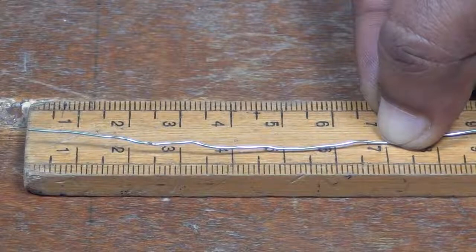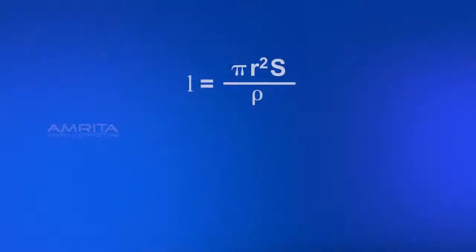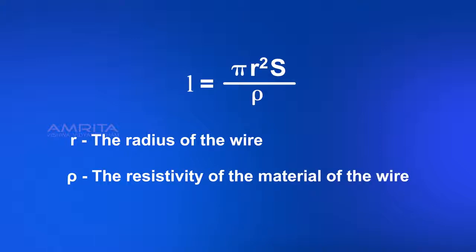Let L be the length of the resistance wire required for a resistance of S ohm. Then L equals pi R squared S divided by rho, where R is the radius of the wire and rho is the resistivity of the material of the wire.